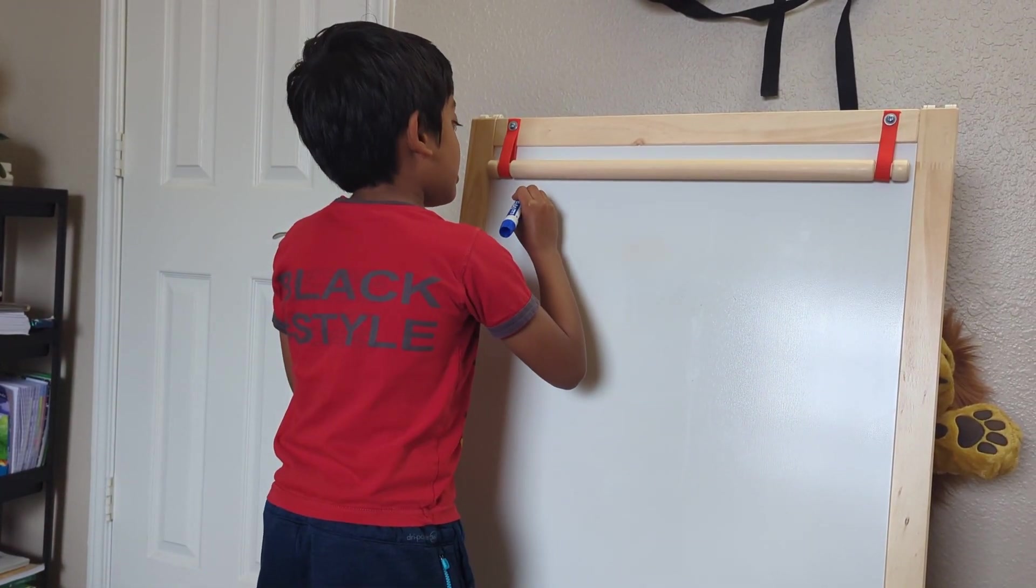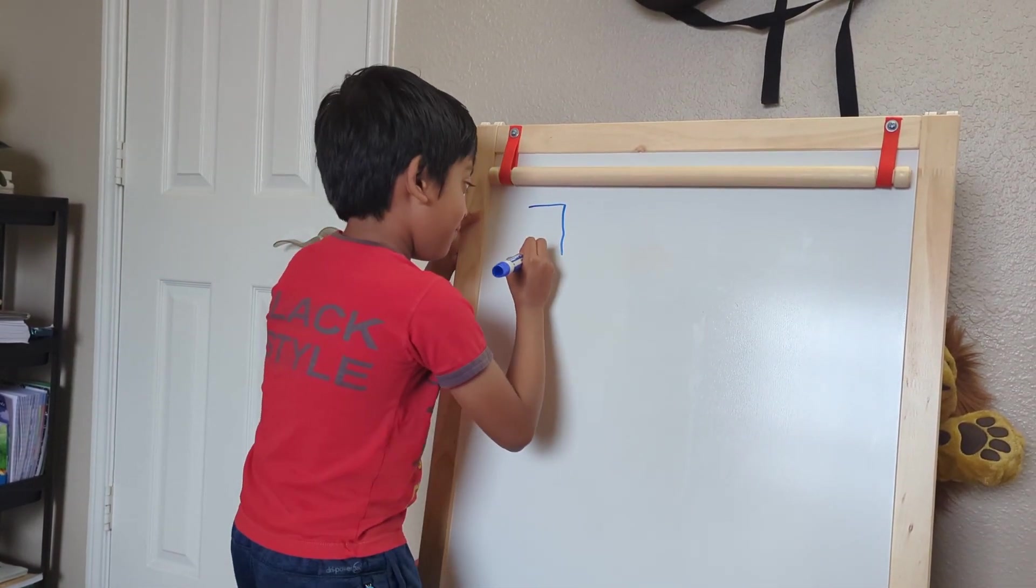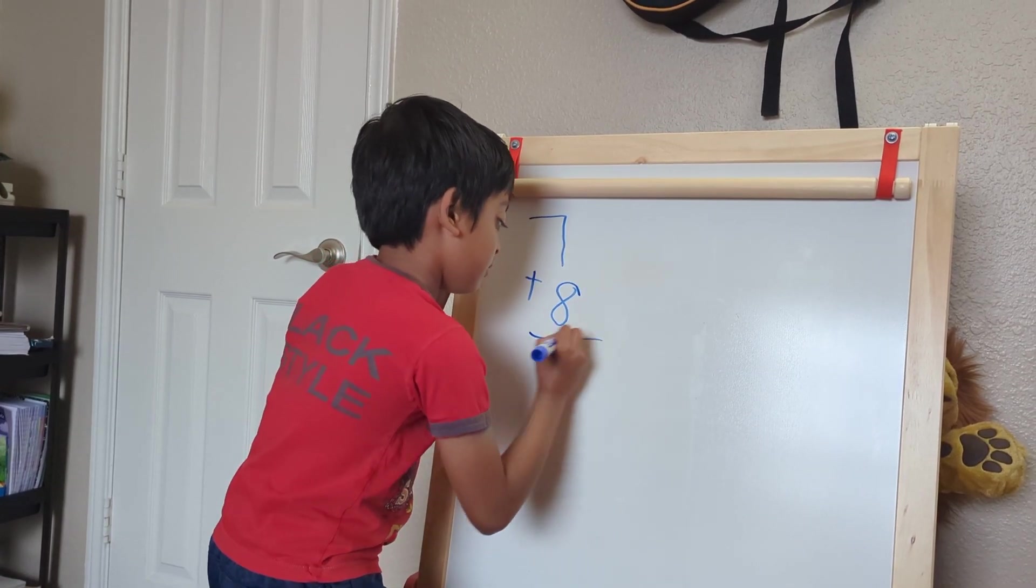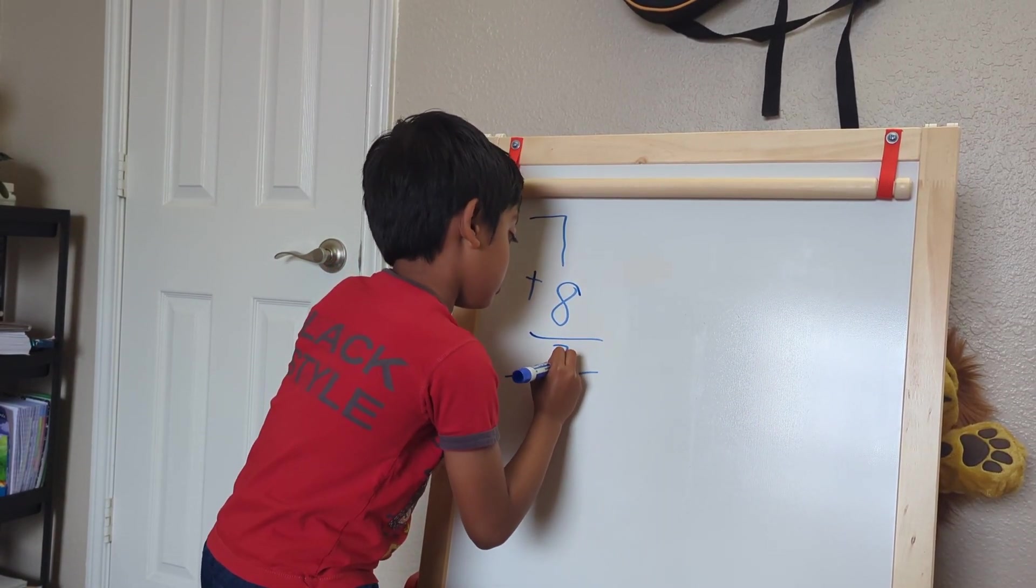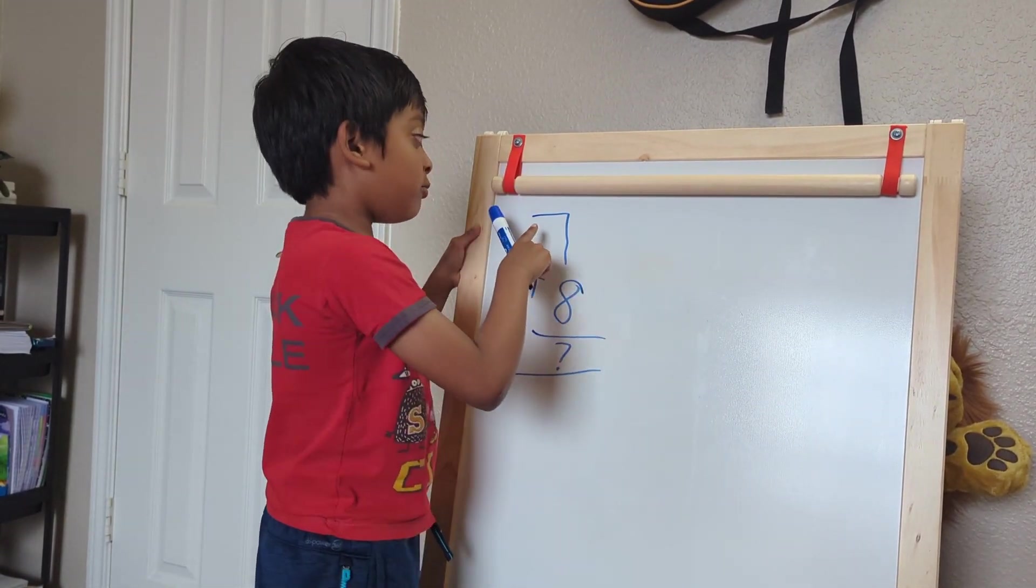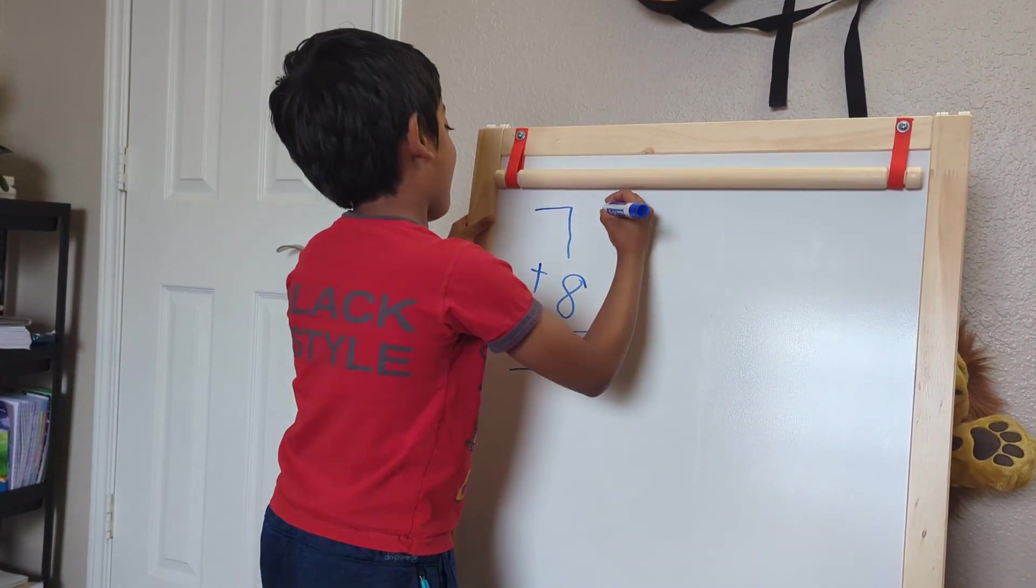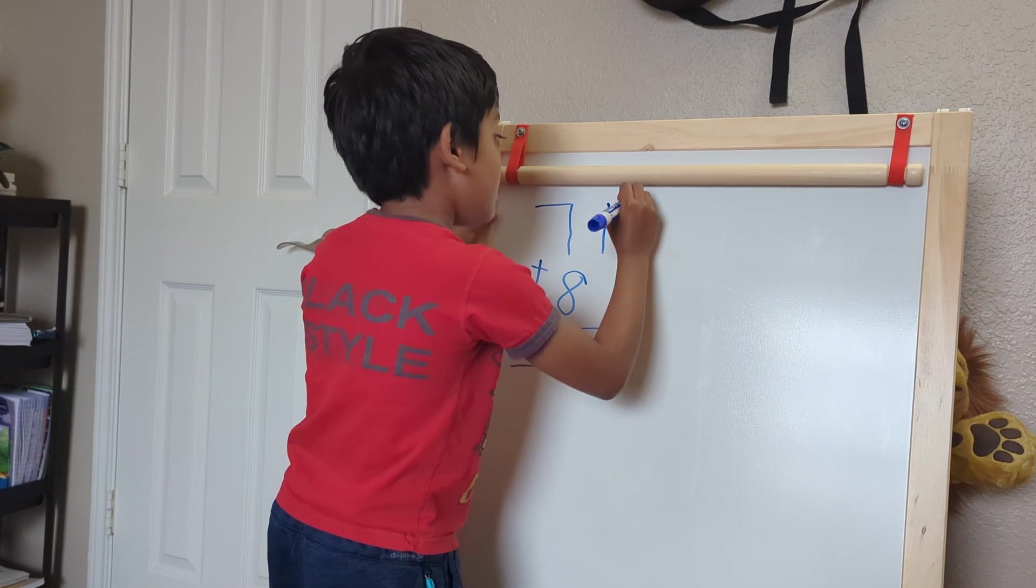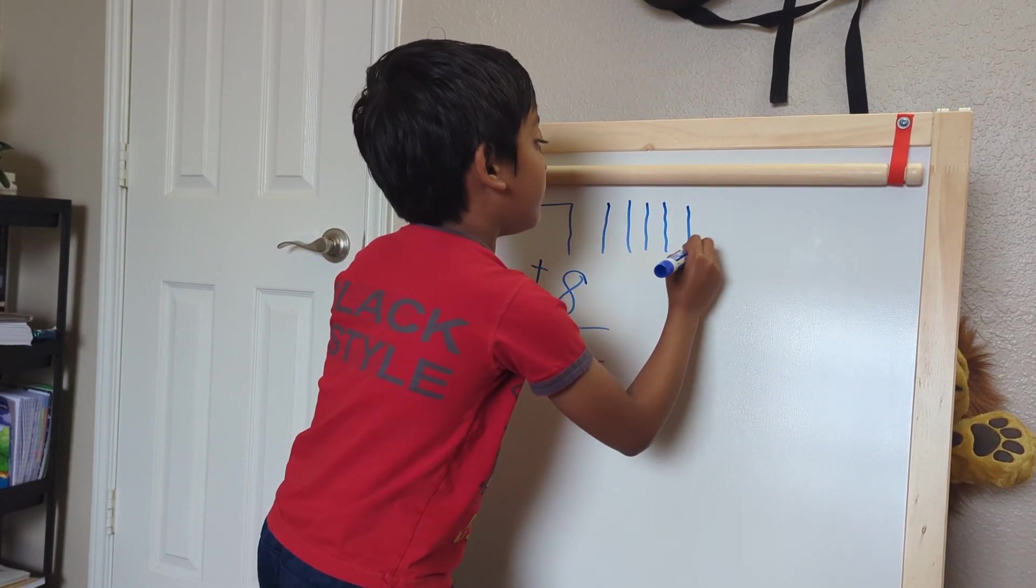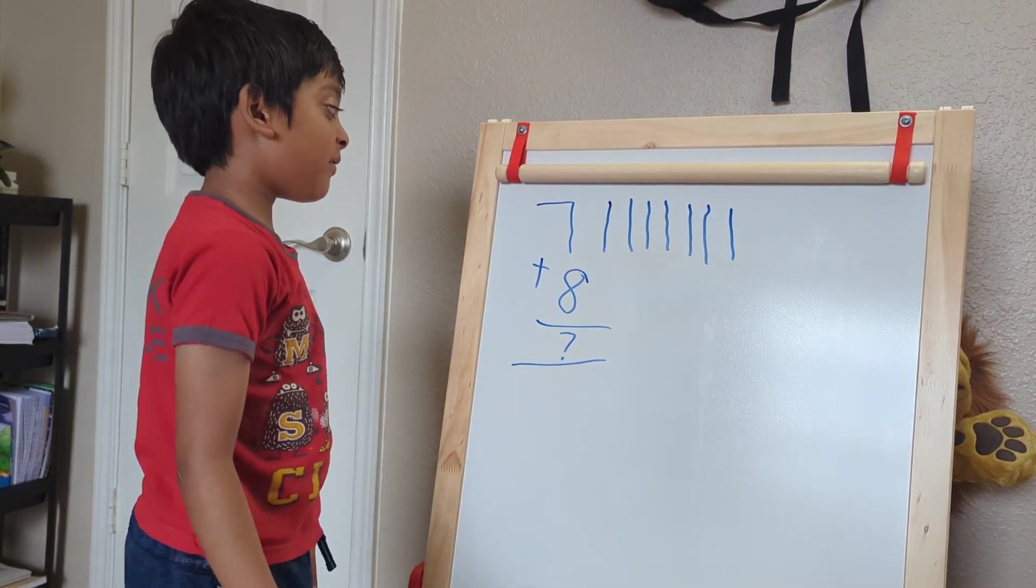So let's do 7 plus 8. So what number do you see? It's 7. So let's write 7 lines. 1, 2, 3, 4, 5, 6, 7. So that makes 7.